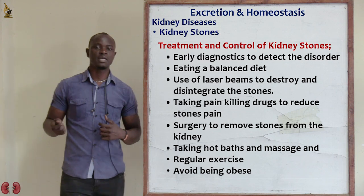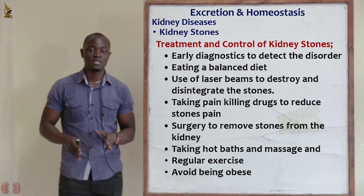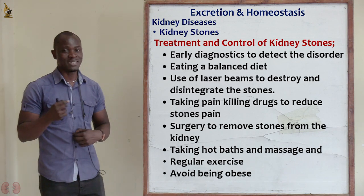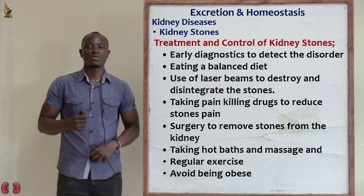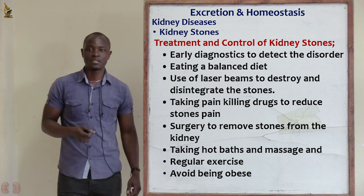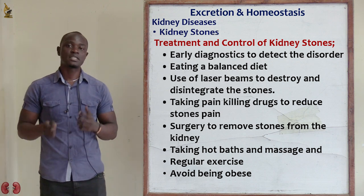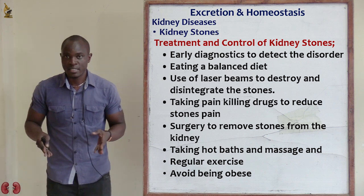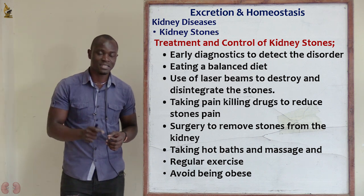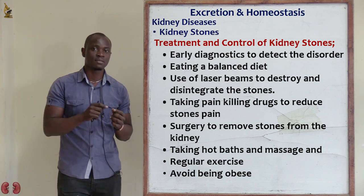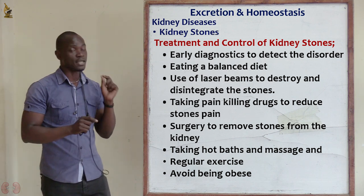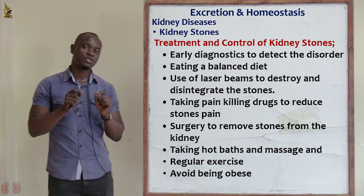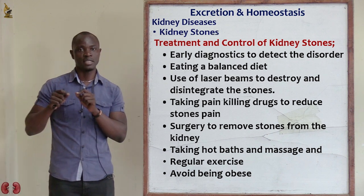What are the treatments and control for kidney stones? The first is early diagnosis to detect the problem, so the person can be treated before it escalates to dangerous levels. Apart from that, eat a balanced diet. Also, use laser beams to disintegrate and destroy the stones in the kidney — this is a surgery done by medical personnel.